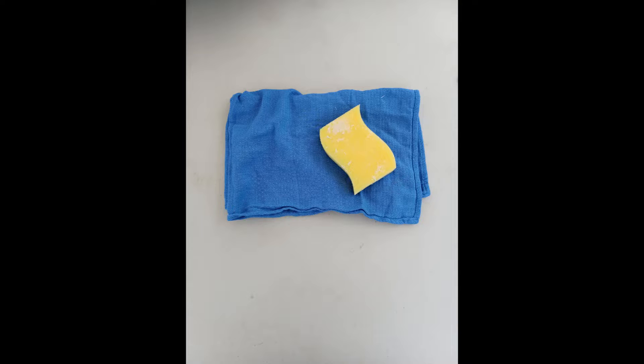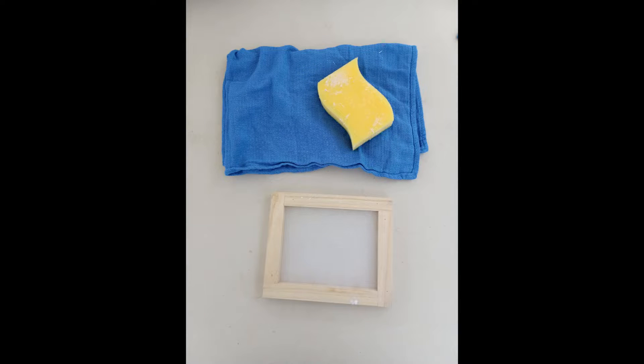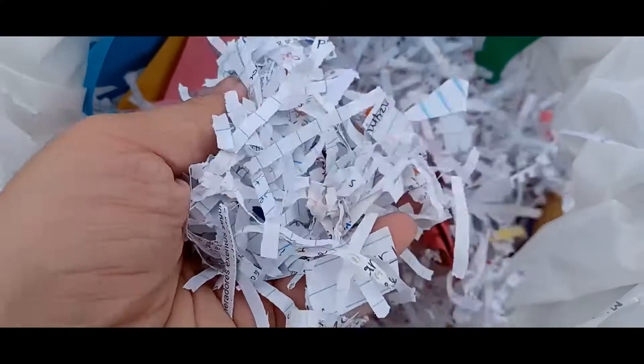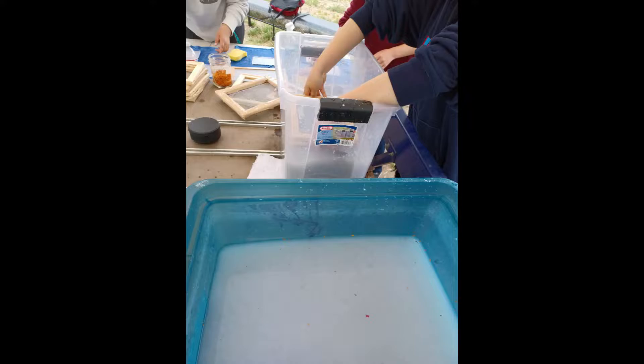Tools you'll need include a sponge and a cloth to absorb moisture, a mold and decal to form and mold your paper, and a blender or if you don't have a blender, a water bottle with rocks to form your paste, and of course your paper. In addition, you will also need a bucket or any container to hold your water so that way you can make your paste.